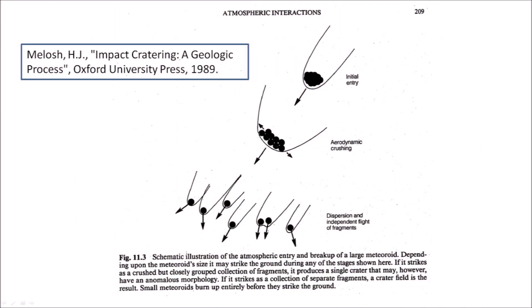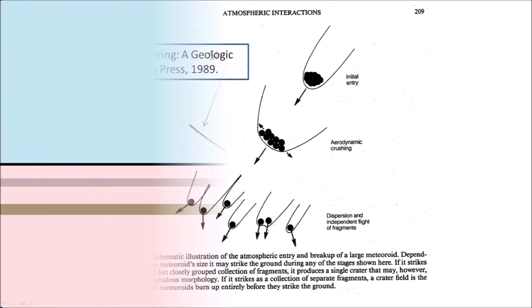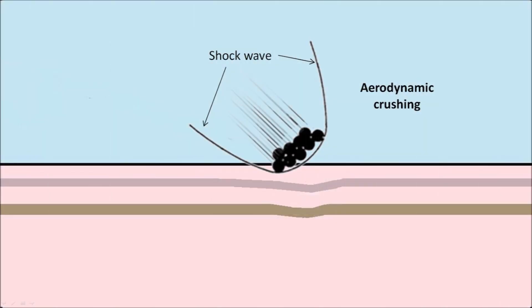The book on impact cratering by Professor Melos shows the atmospheric entry and breakup of a large meteoroid. Depending upon the meteoroid's size, it may strike the ground during any of the stages shown. If it strikes as a crushed but closely grouped collection of fragments, it produces a single crater that may have an anomalous morphology. If it strikes as a collection of separate fragments, a crater field is the result. Small meteoroids burn up entirely in the atmosphere before they strike the ground. A projectile crushed by aerodynamic forces strikes as a closely grouped collection of fragments that may make a crater with anomalous morphology.